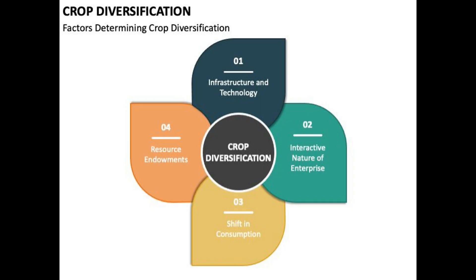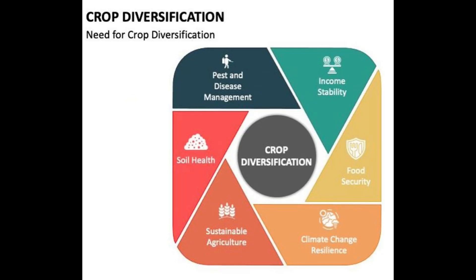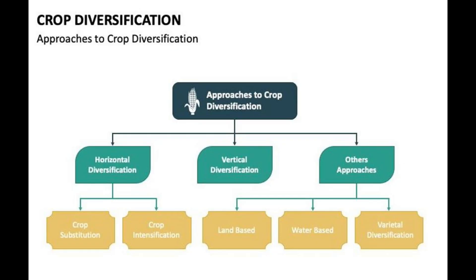Factors determining crop diversification: 1. Infrastructure and Technology, 2. Interactive Nature of Enterprise, 3. Shift in Consumption, 4. Resource Endowments. The following things can be considered for the need for crop diversification: pest and disease management, income stability, food security, climate change resilience, sustainable agriculture, and soil health.